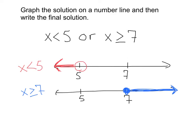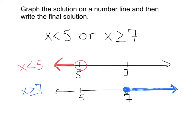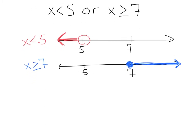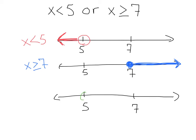This represents all the solutions of x is greater than or equal to 7. Now I'll give myself one final number line with my two important numbers. Before graphing, I need to check whether I have an or or an and — here I have an or. Or means this could be true, or this could be true. So since x is less than 5 is true, I'm including that, and since it's an or, I'm also including x is greater than or equal to 7.